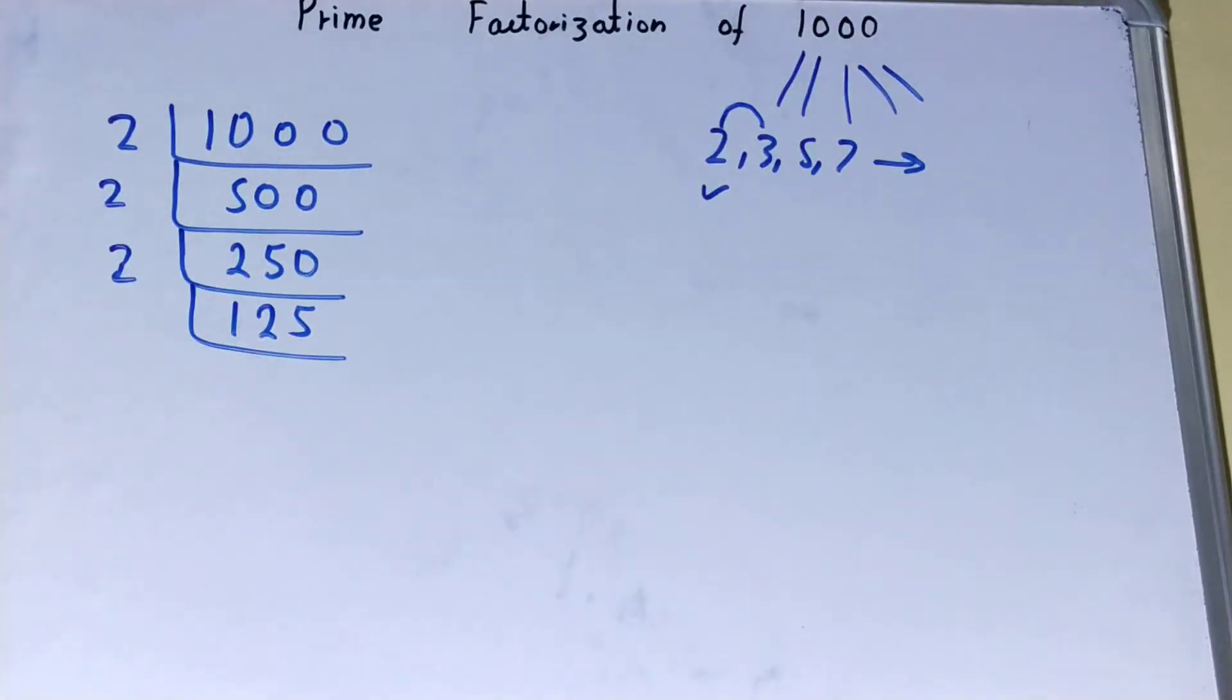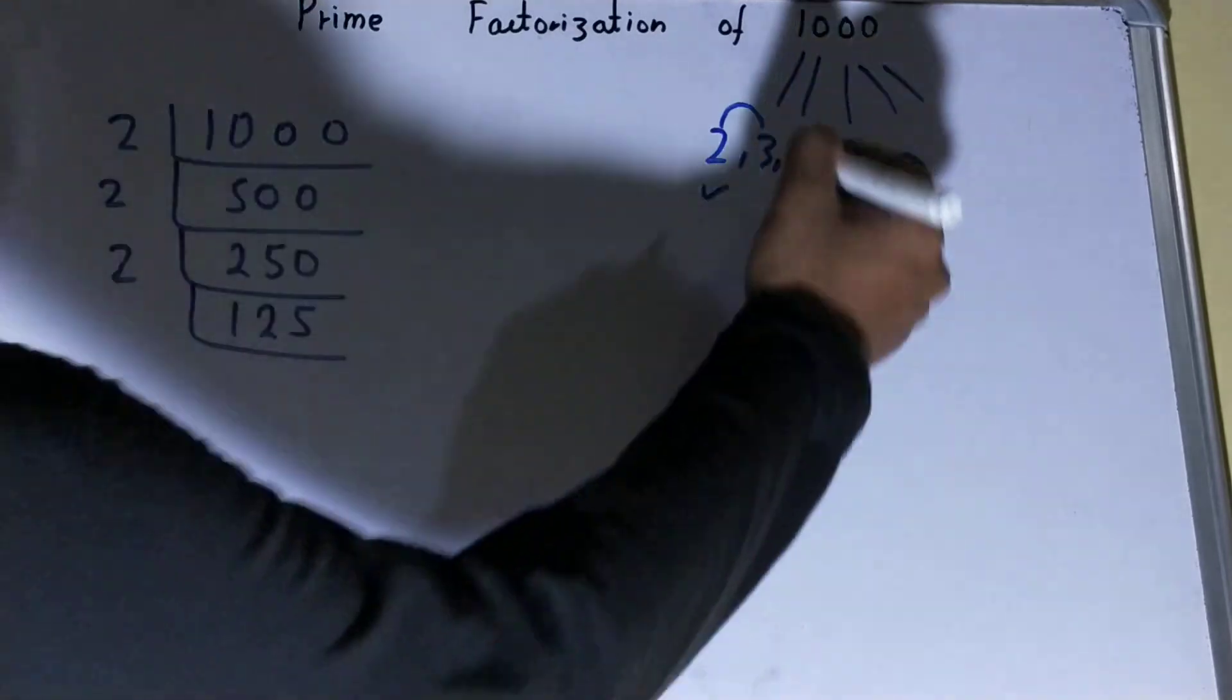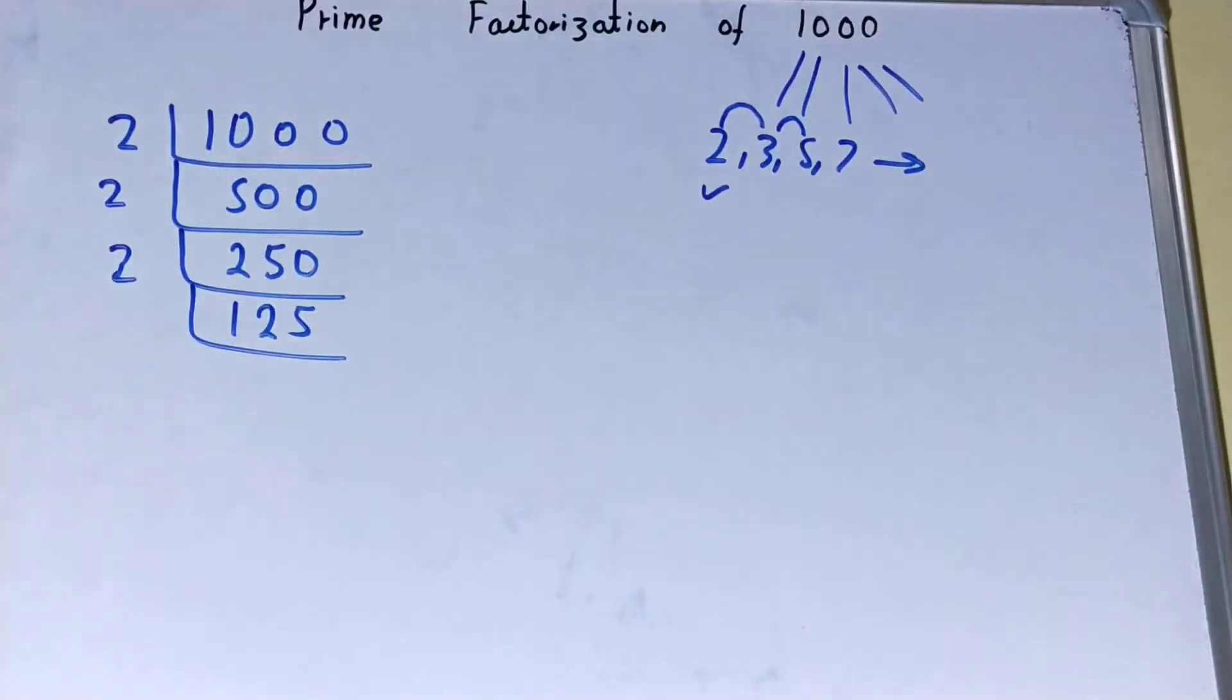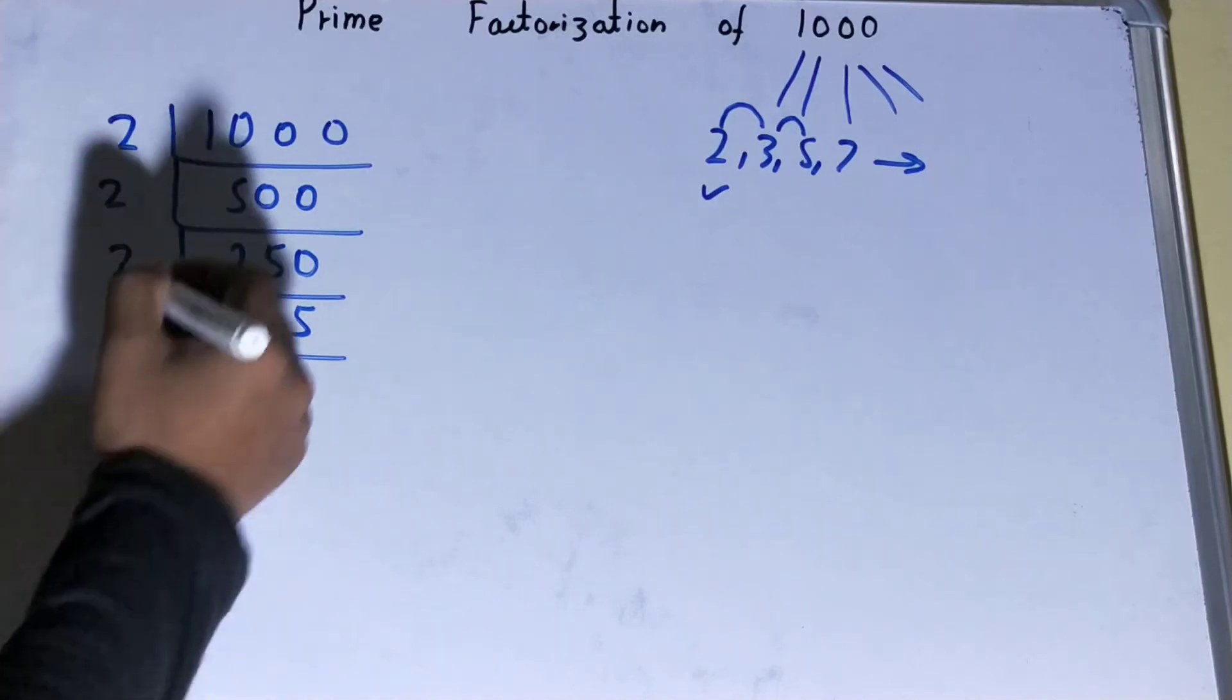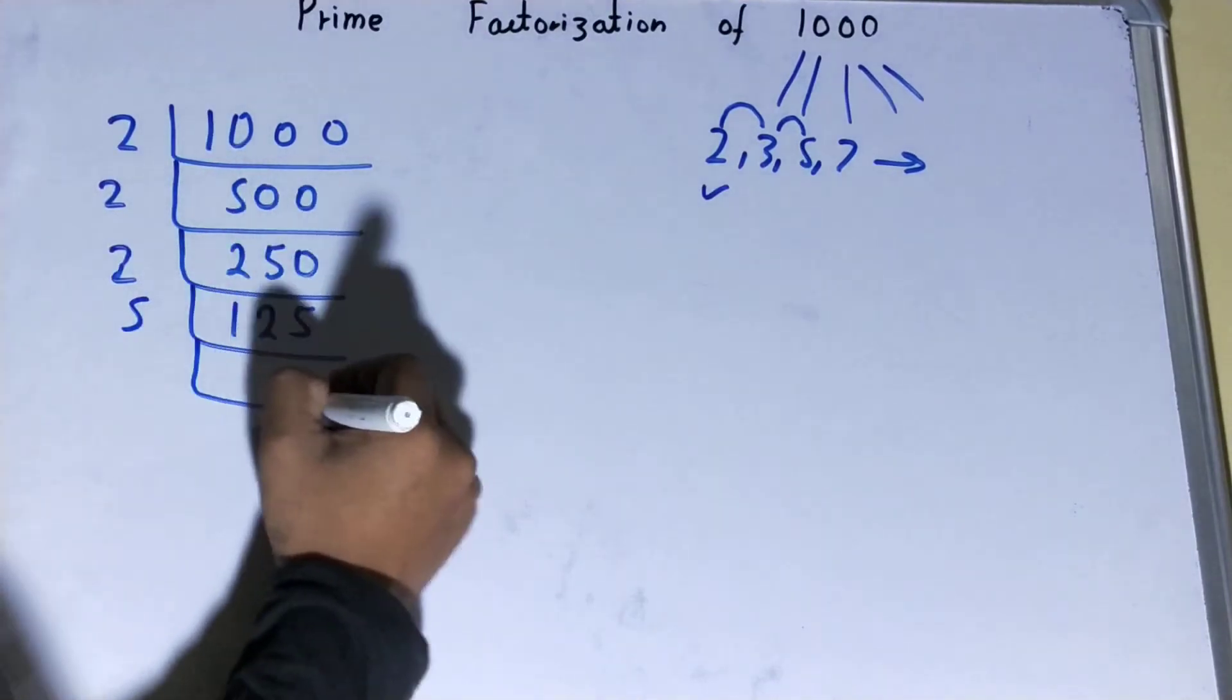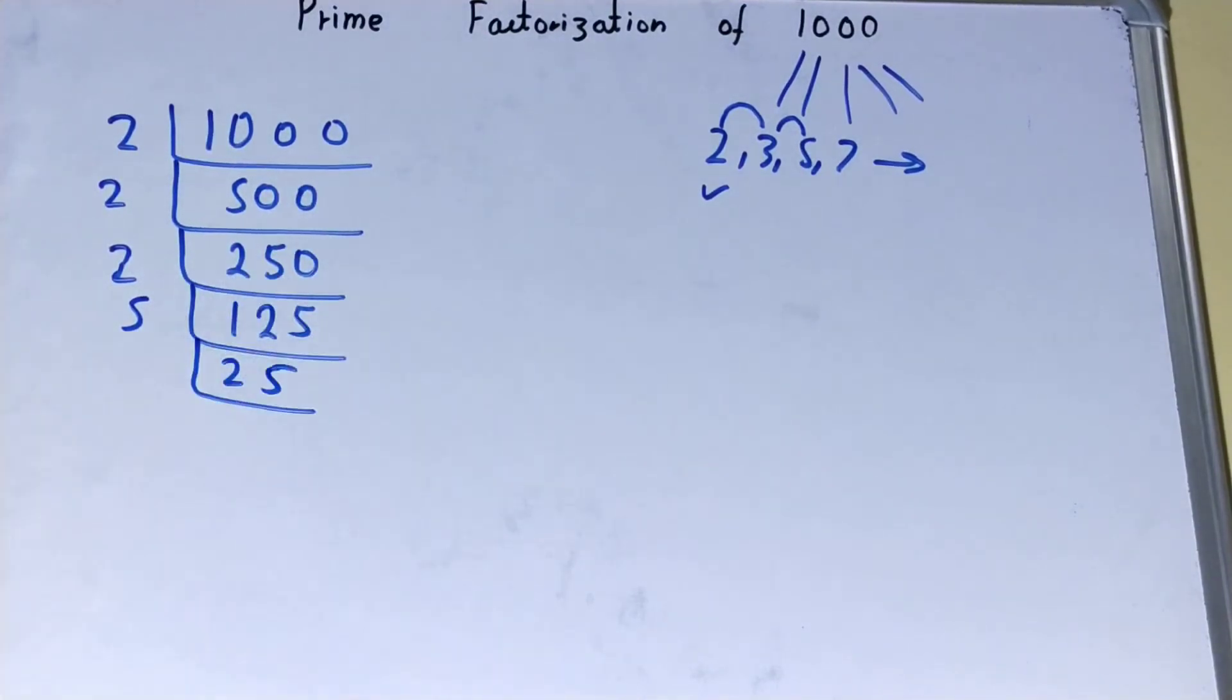So what we'll do is we'll move on to the next lowest prime number, that is 5. Is this 125 divisible by 5? It is, so divide it and you'll be left with 25. Again, is this 25 divisible by 5? It is, so divide it and you will be left with 5.